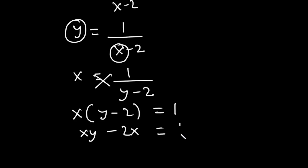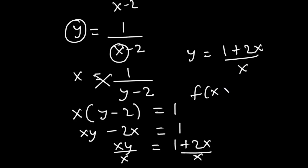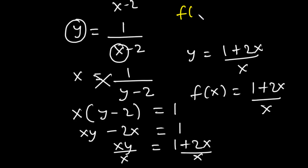Because we want to make y standalone, we transpose −2x to the right-hand side: xy = 1 + 2x. Dividing both sides by x gives y = (1 + 2x) / x, which is f(x). So it is confirmed that if you have a function f(x) whose inverse is f⁻¹(x), then the inverse of f⁻¹(x) gives back the original function f(x).